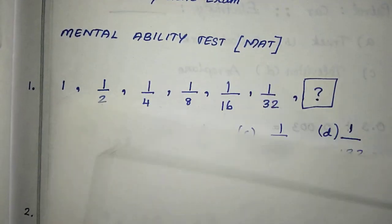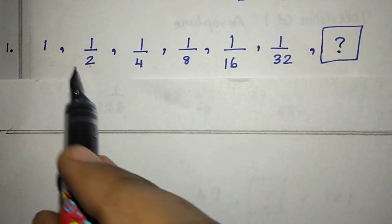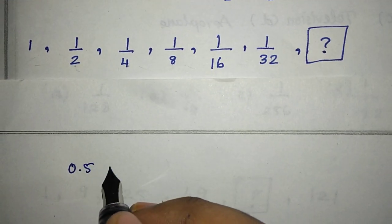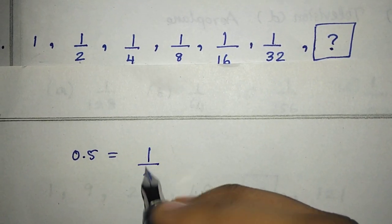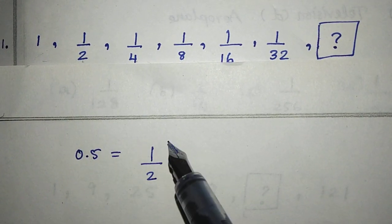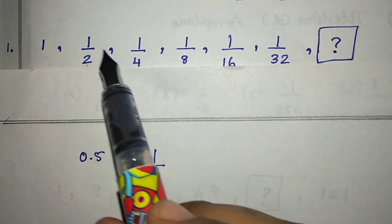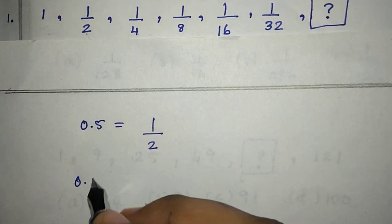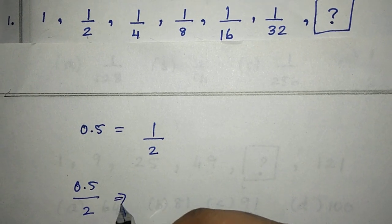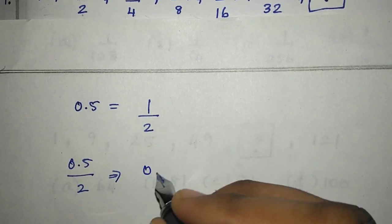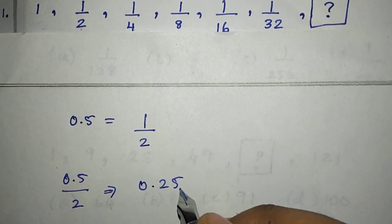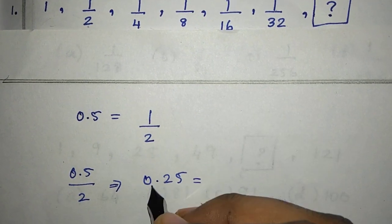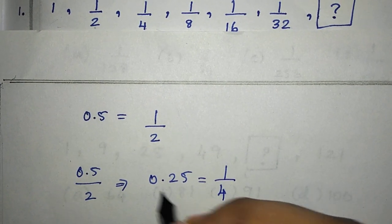First we have 1. We have 0.5 multiplied by 0.5. So if we have 1 divided by 2, we have 0.5. Over here we have 0.5 multiplied, then we have 1/2. We have 0.5 multiplied by 2, then 0.5 divided by 2, and if we solve it we will get 0.25.